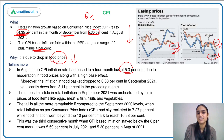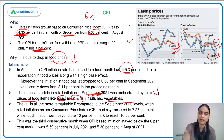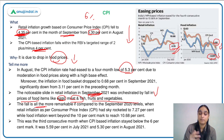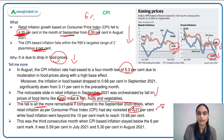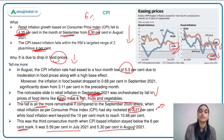The noticeable slide in retail inflation in September was because of a fall in price of food items — eggs, meat, fish, fruits, and vegetables. The fall is remarkable because if we compare it to the previous year, inflation had skyrocketed to 7.27%, beyond the RBI threshold. Now we have reduced so much, which is noteworthy. This was the third consecutive month where CPI stayed below the 6% mark — it was 5.59% in July and 5.3% in August. This is a positive point.